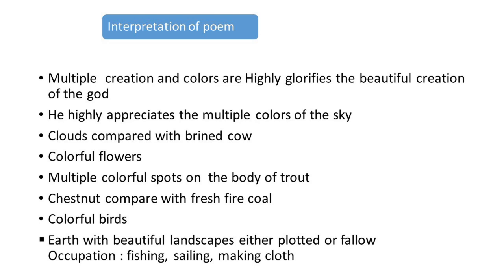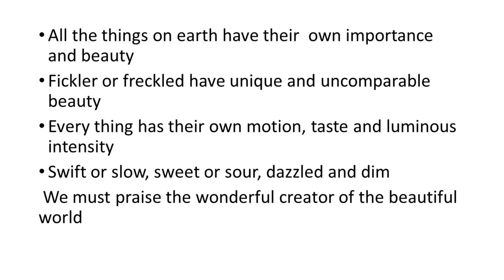He also talks about the beautiful colors of varieties of birds and about the earth with its beautiful and varied landscape — multiple colors of the landscape, the land either plotted or fallow. He even talks about different people involved in different occupations: some fishing, some sailing, some making cloth. All these varieties of things on earth have their own importance.